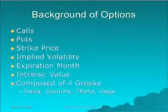Options pricing is composed of four Greeks: Delta, Gamma, Theta, and Vega.